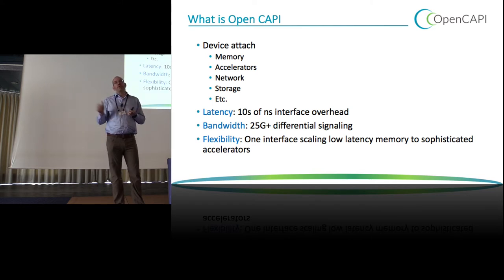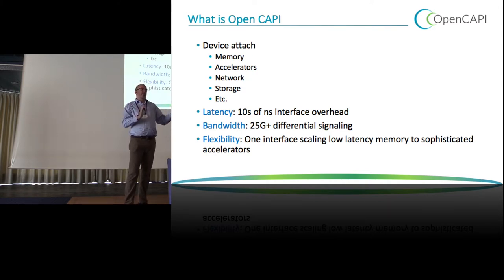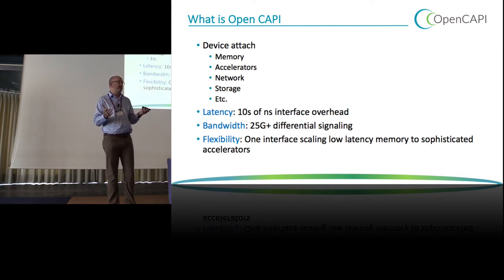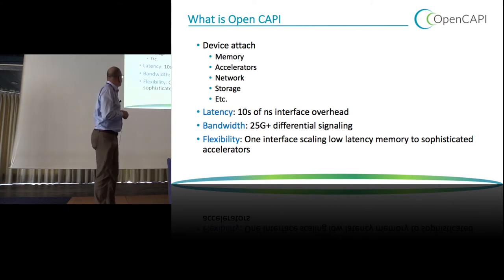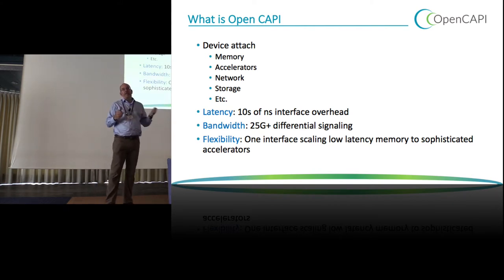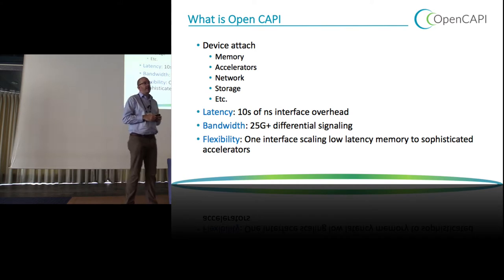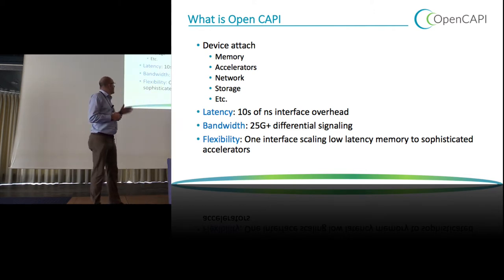We want to be able to attach memory — low latency DRAM all the way up to storage class memory. We want to attach accelerators that could be FPGAs, low cost ASICs, and network devices. We do a lot of work with Mellanox on these topics. The value of one common interface is that I can build a processor chip with 128 or 256 lanes of connectivity, and then use all those lanes for DDR or some fraction for accelerators — one I/O design with full flexibility.